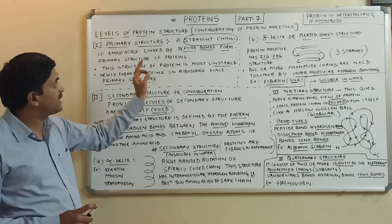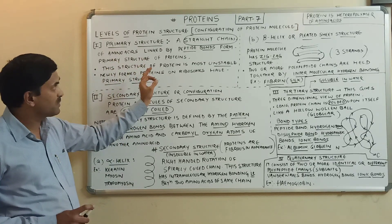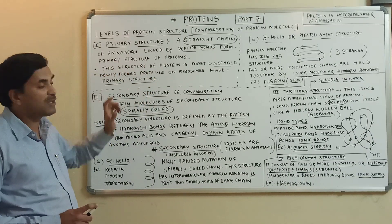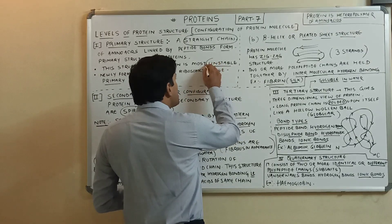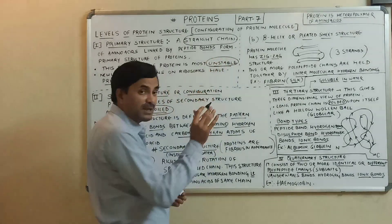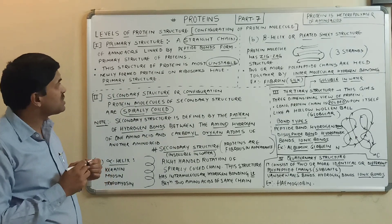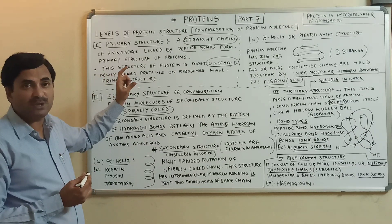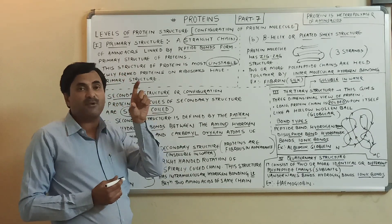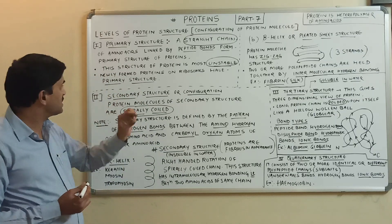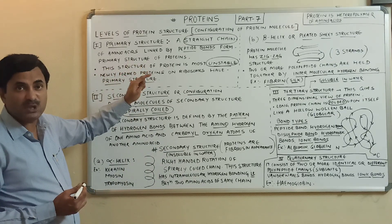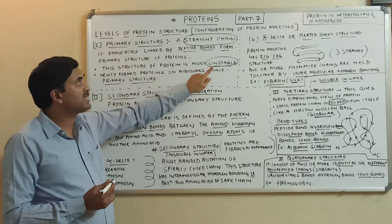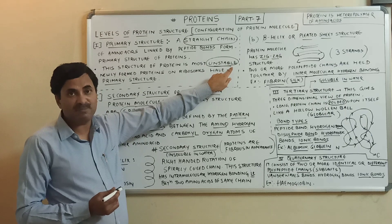The primary structure of the protein is the most unstable structure — it is not a stable structure. The newly formed proteins on ribosomes have a primary structure, and that structure is an unstable structure.